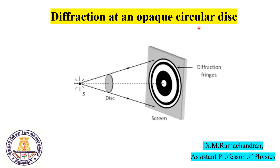Good morning friends. Today we discuss the topic on diffraction at an opaque circular disk. This falls under Fresnel diffraction, where the source, object, and screen are at finite distances from each other.